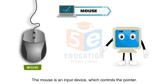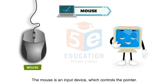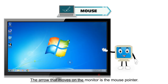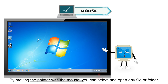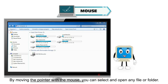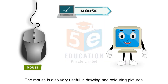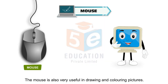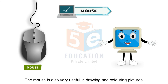The mouse is an input device which controls the pointer. The arrow that moves on the monitor is the mouse pointer. By moving the pointer with the mouse, you can select and open any file or folder. The mouse is also very useful in drawing and colouring pictures.